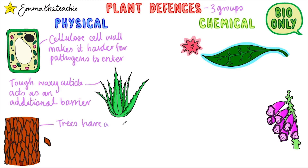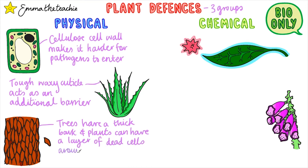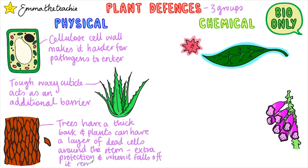Trees have a thick bark, and plants without this have layers of dead cells around the stem. This is an extra layer of protection and it helps remove pathogens when the dead cells are shed or the bark falls off.